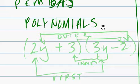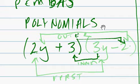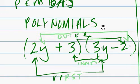And it's as easy as this. So we have an equation. We'll say 2y plus 3 times 3y minus 2. And what do we do? We do the first. That's our first.